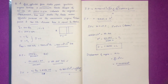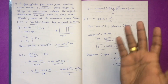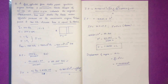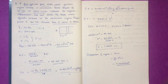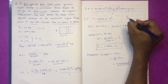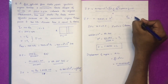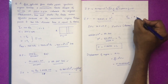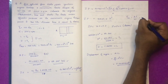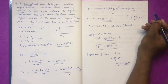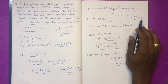I will assume mechanical efficiency is 50%, which is 0.5. Mechanical efficiency equals brake power divided by indicated power. So this is 50%, it is 0.5.